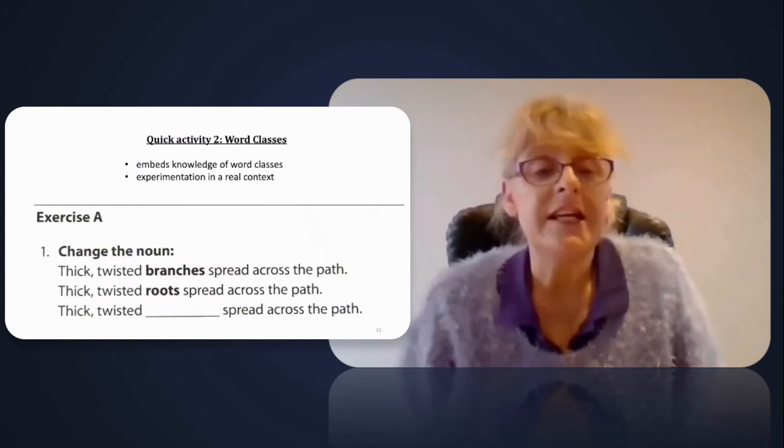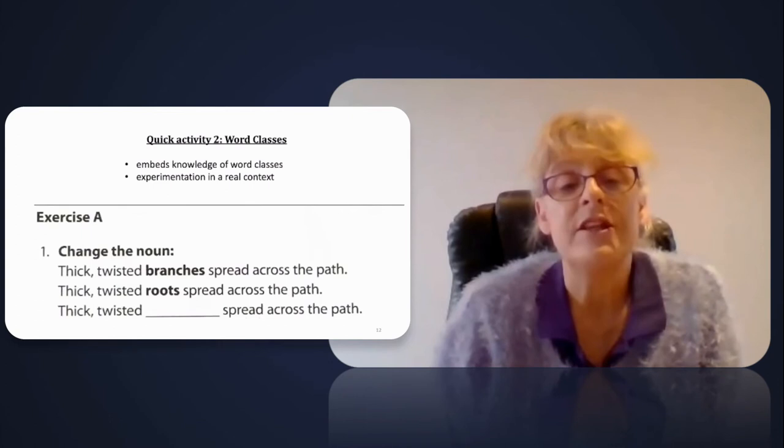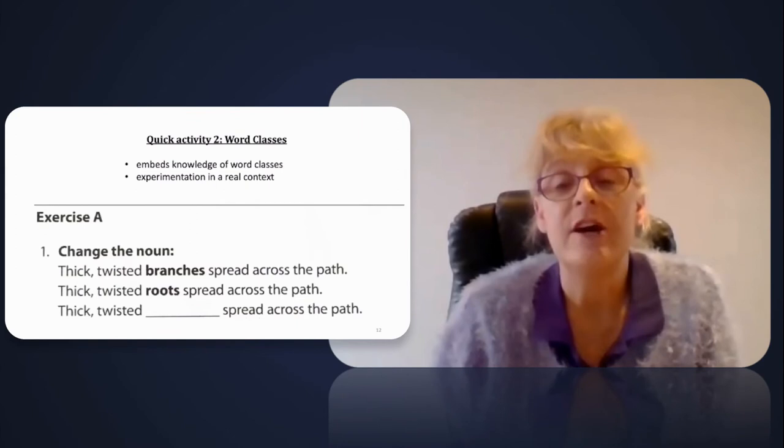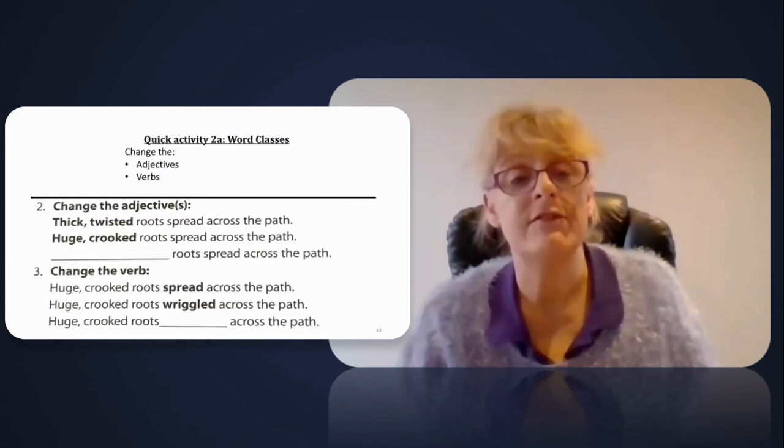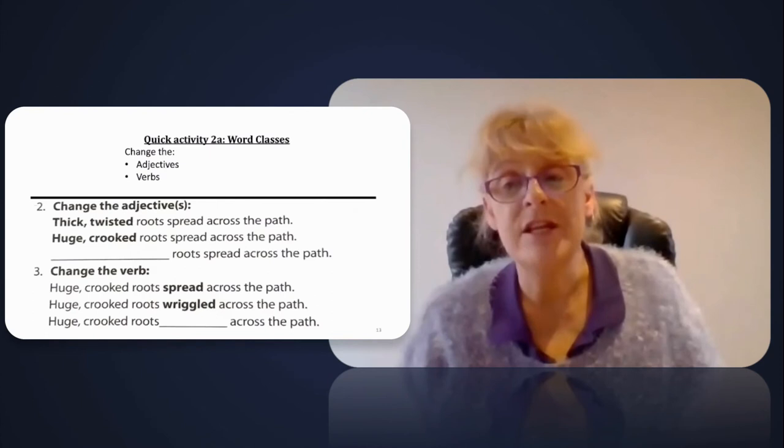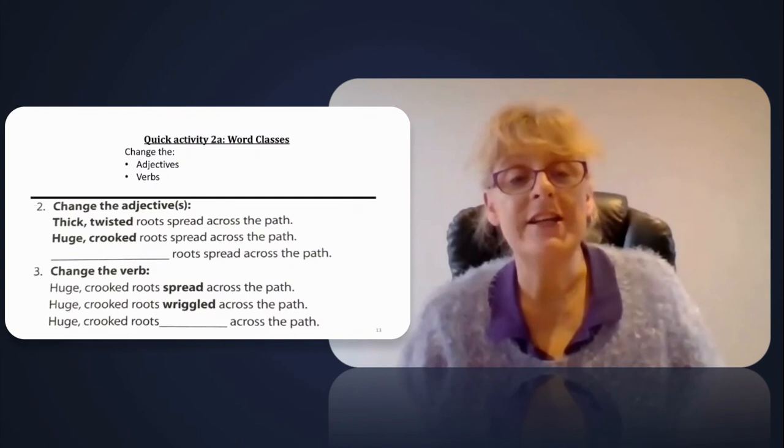The second activity builds on the first one and deals with changing each individual class. So for the first one, change the noun. So branches could become roots. Step two: change the adjective. So thick twisted could become huge, crooked. Step three: change the verb. So for example, spread could become wriggled.